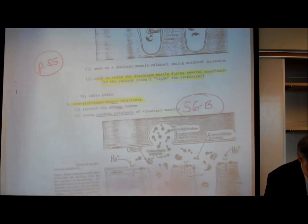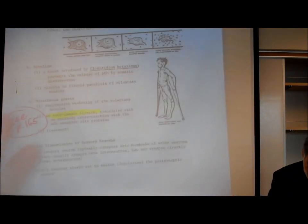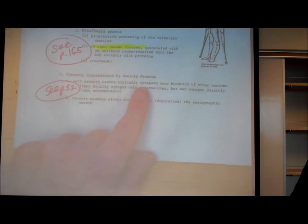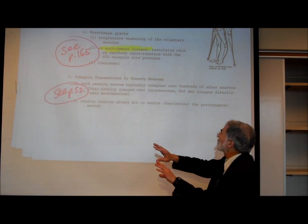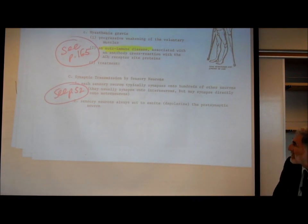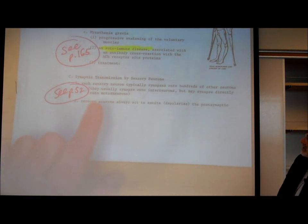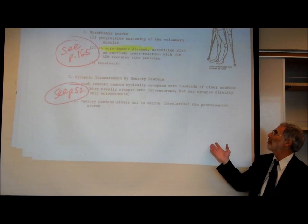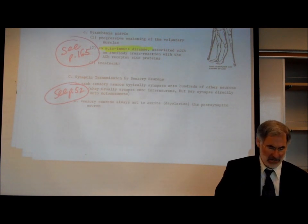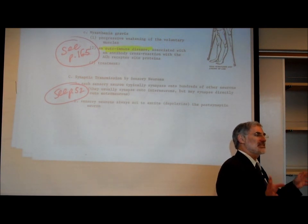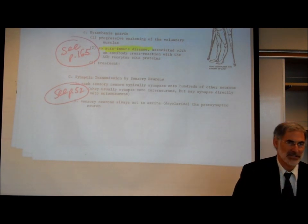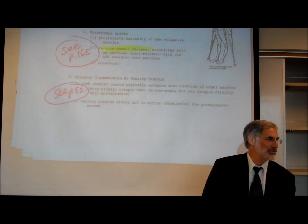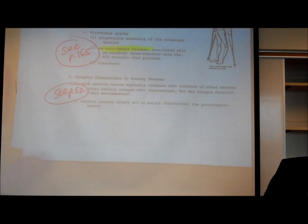On page 56 at the bottom, we wrote that each sensory neuron typically synapses onto hundreds of neurons — mostly interneurons, but sometimes they synapse directly onto motor neurons. Each sensory neuron always releases a neurotransmitter that excites or depolarizes the postsynaptic neuron. Different sensory neurons release different neurotransmitters, so unlike somatic motor neurons which all release acetylcholine, they don't all release the same chemical. But they always act to excite.